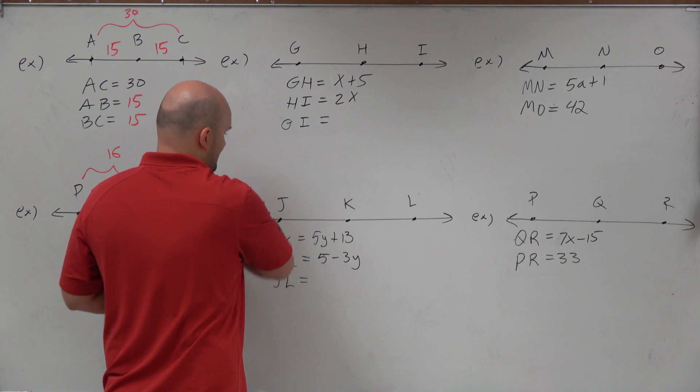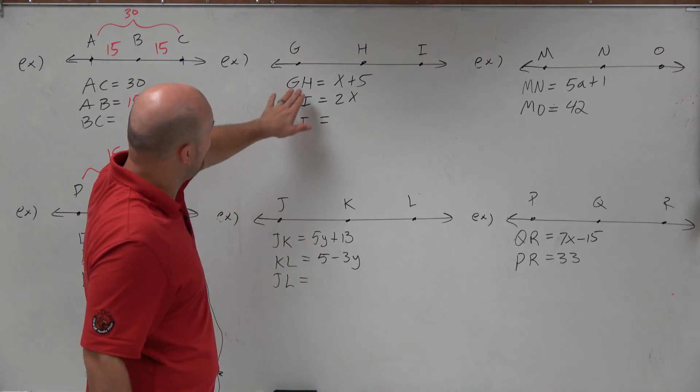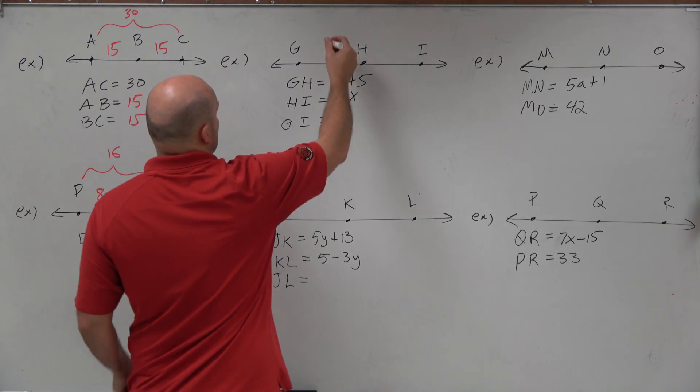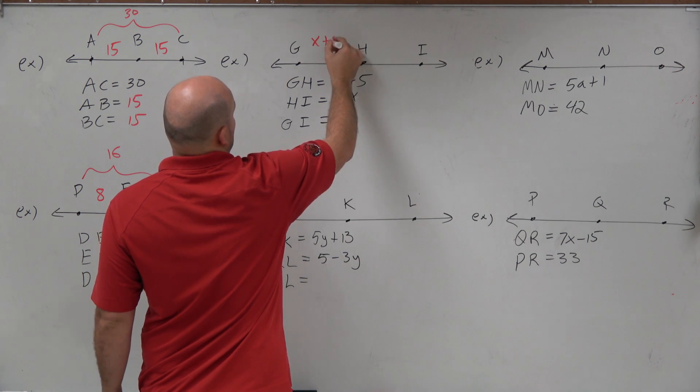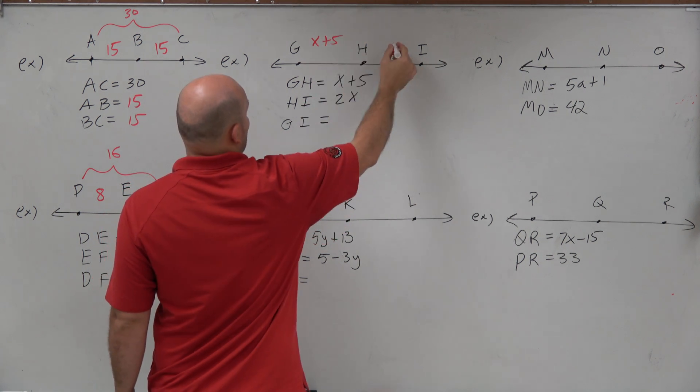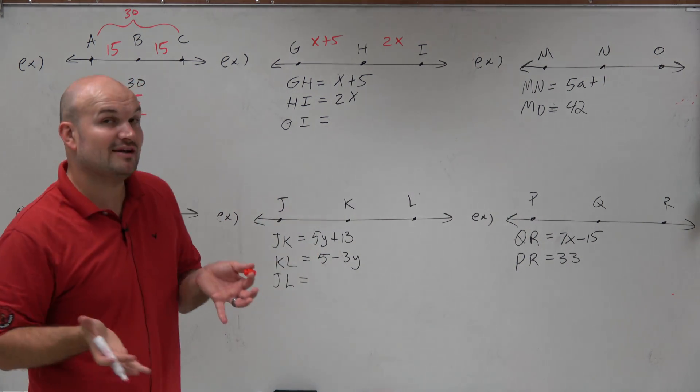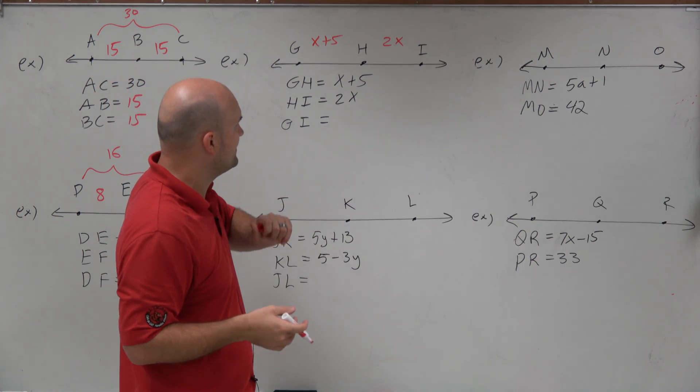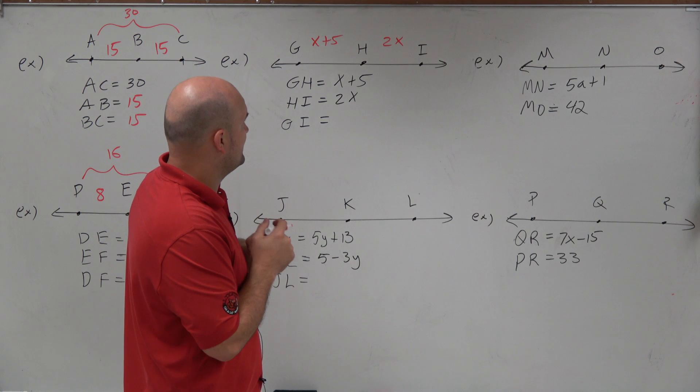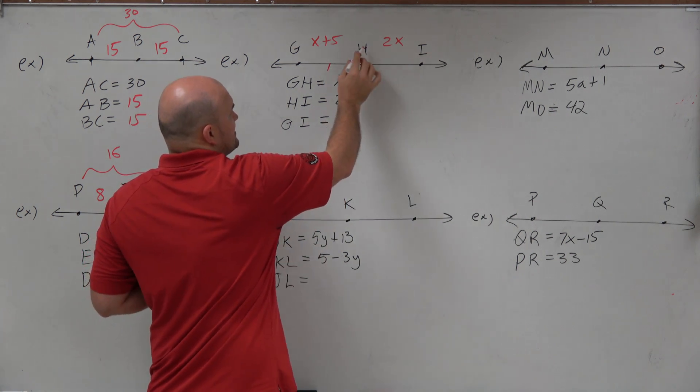All right. So I'm going to get rid of this example here. And let's cut it right in here. So if I know GH is x plus 5, G to H is x plus 5, and H to I is 2x, then what is G to I? OK. So we've got to be able to figure out what x is before we can figure those out.